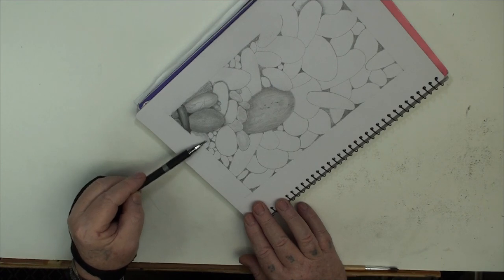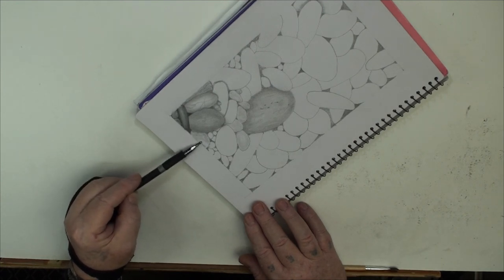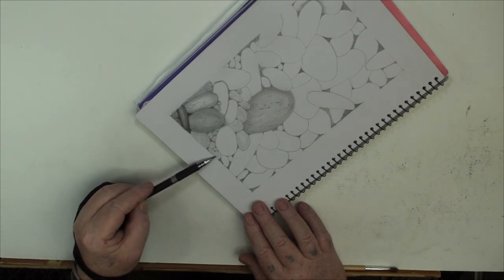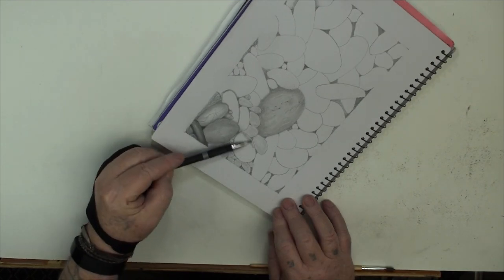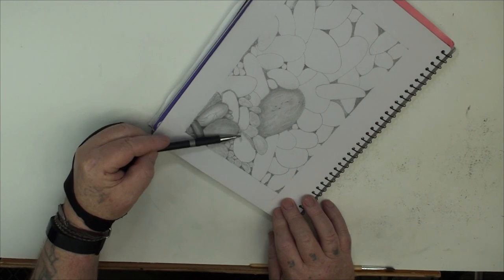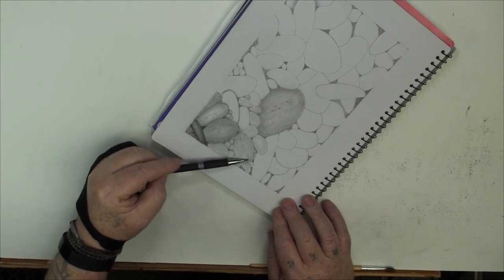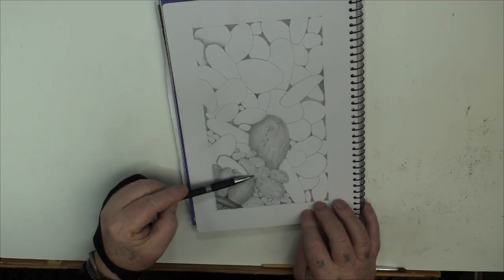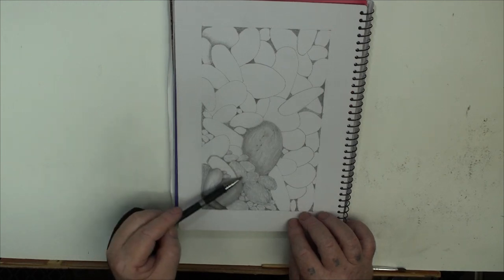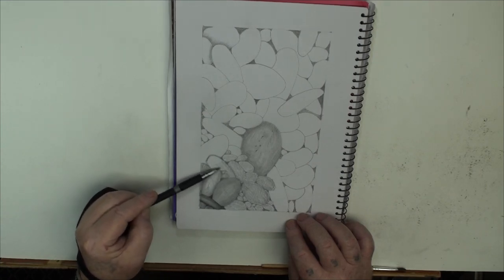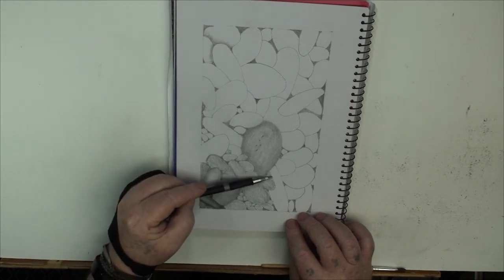I might just do a few little shapes, a few of the pebbles, just to get it started. And then we can decide what sort of a texture we want to put on them. What we want to create. The thing is, it's just to do each one individually. And sort of go with the shape of it.